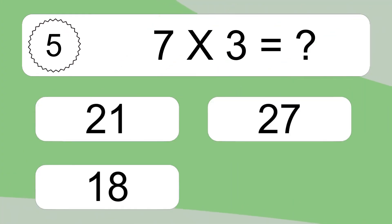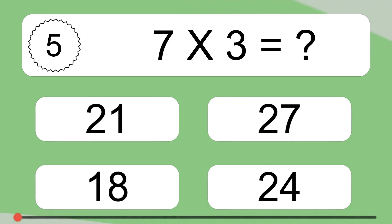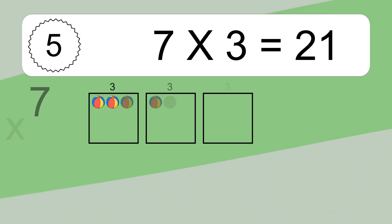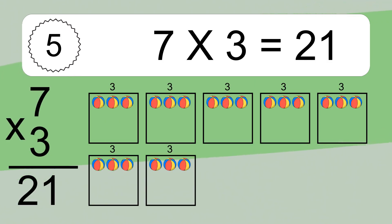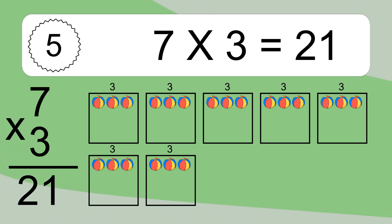7 times 3 equals what? We have 7 boxes, and each box has 3 colorful balls inside. If you count all the balls in all the boxes together, you will have 7 times 3 balls. This equals 21 balls.